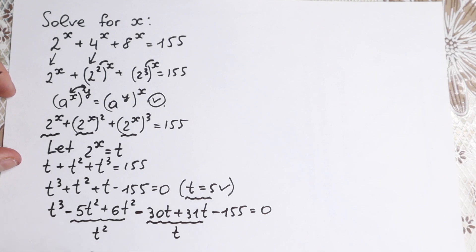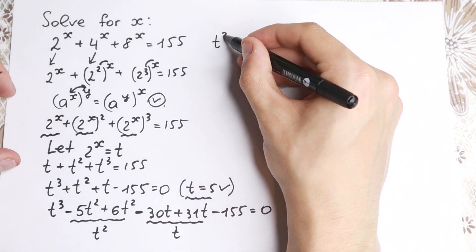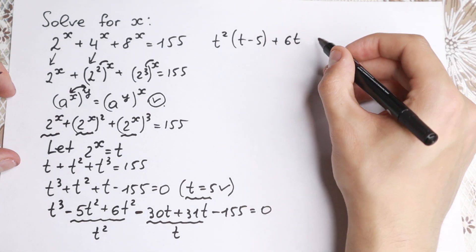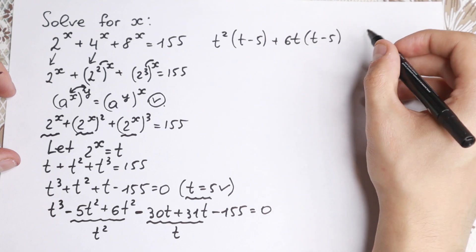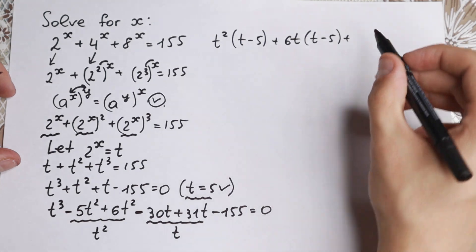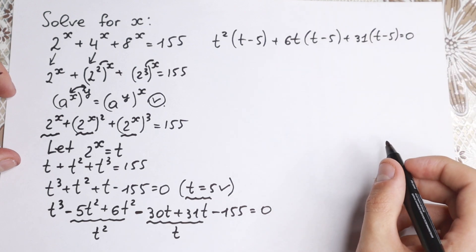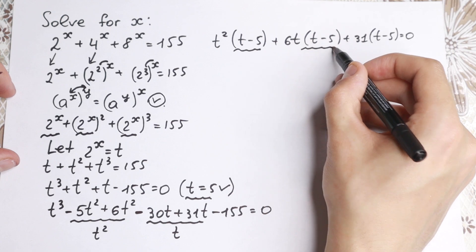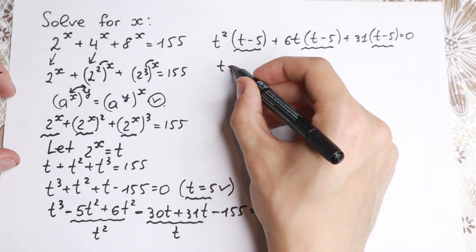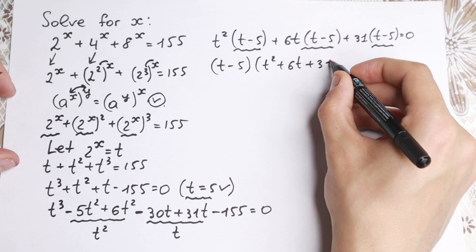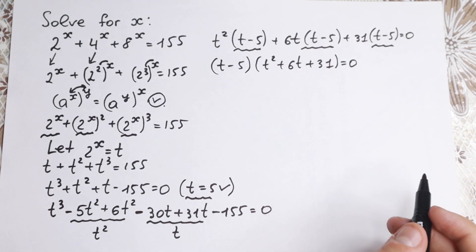Okay, nothing changed for us but if we look closely we can factor from here. Take a look. t cubed minus 5t squared, we can easily factor t squared in parentheses t minus 5. The next plus, if we factor from here 6t, we have t minus 5 plus 6t. We have t minus 5. And the last plus right here, 31t minus 155, we factor 31, t minus 5 equal to zero. And finally take a look, t minus 5 and t minus 5. Let's factor it: t minus 5 times t squared plus 6t plus 31 equal to zero. So we finally find our answer.